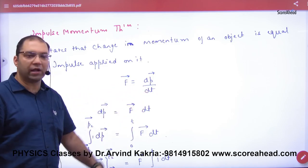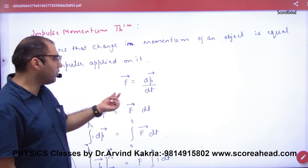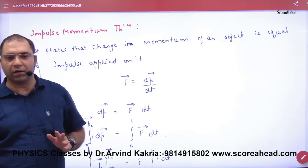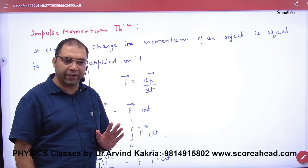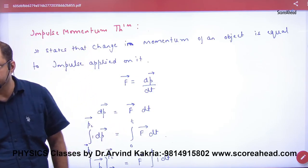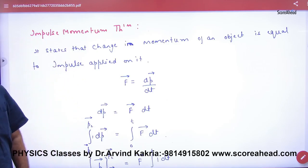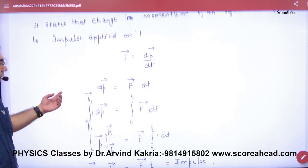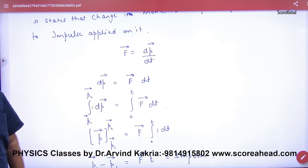How do we start? Newton's second law. F is equal to dp by dt, that is the rate of change of momentum. F vector is equal to dp by dt. So dp is equal to F into dt. This is the small change in momentum covered in small time dt.